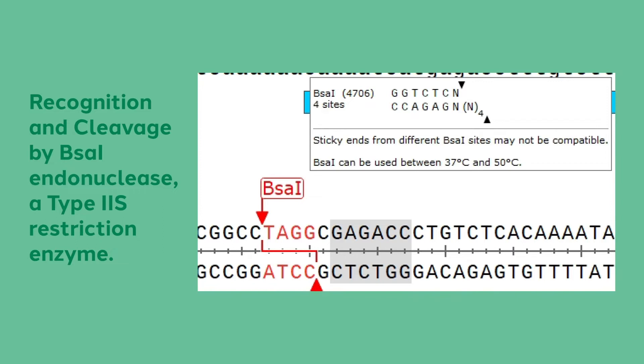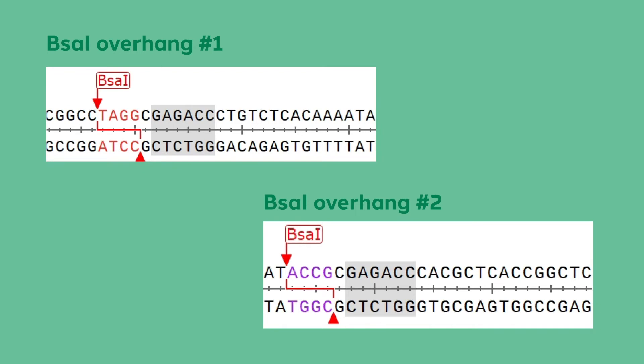BSA1 is a type 2S restriction enzyme commonly used in Golden Gate cloning. This image from Snapgene shows its recognition sequence in gray. Reading from the 5' end of the lower strand, it is GGTCTC. Shown in red is the 4 base pair overhang. Since cleavage occurs at a set distance from the recognition sequence for each type 2S restriction enzyme, the composition of the overhang can vary from cleavage site to cleavage site.